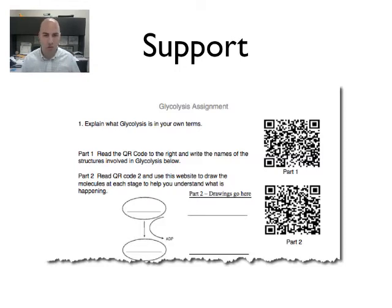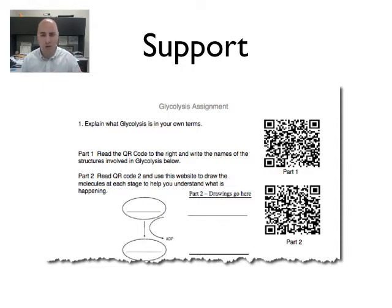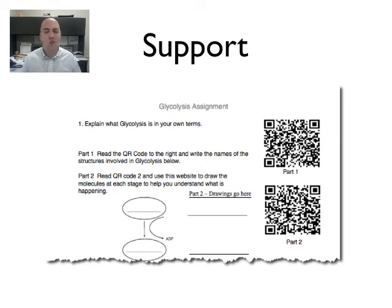Let's say you're a math teacher and kids get stuck at home and don't know where to go next. Why not make a tutorial, a screencast, or a quick video showing how to do an example problem, then attach it to a QR code on that worksheet? If you don't have time to make it yourself, go find a Khan Academy video, link it to a QR code, and when your kids get stuck they can scan that and get the help they need.